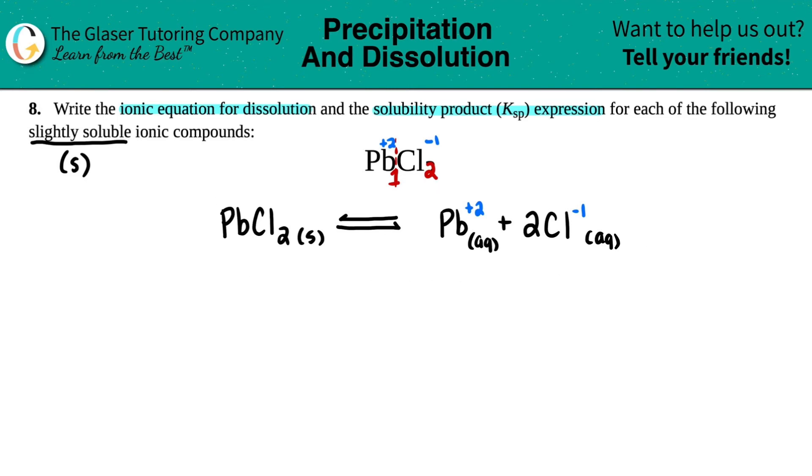Now we just have to take this ionic equation and turn it into the solubility product expression. Well, any K value, right, whether it's Ka or Kb or Kc, which we've seen in chapters before, it just has to do with products divided by reactants. But the Ksp is a little bit easier because we don't have to worry about